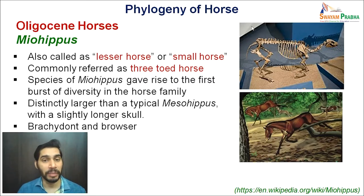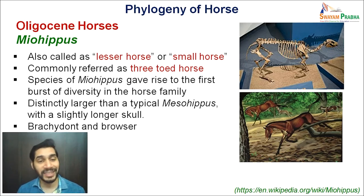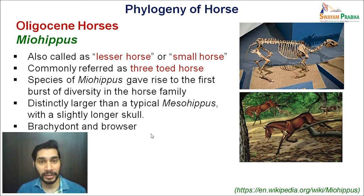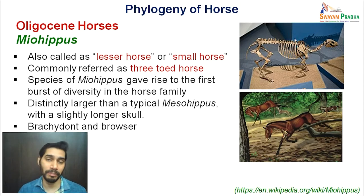The species of Miohippus gave rise to the first burst of diversity in the horse family. Before that, there was an almost linear kind of evolution, but from Miohippus there was a burst in biodiversity with different kinds of horses. Miohippus was distinctively larger than Mesohippus, with a slightly longer skull — not just larger limbs but the skull has also enhanced. They were still brachydont in terms of dentition and hence still browsers. You can see the increased size, limb size, and skull size in the fossil-based image.